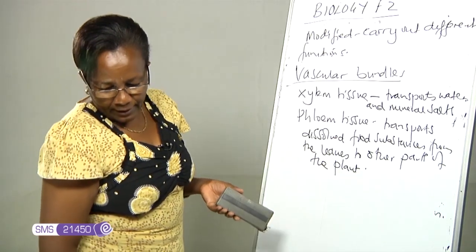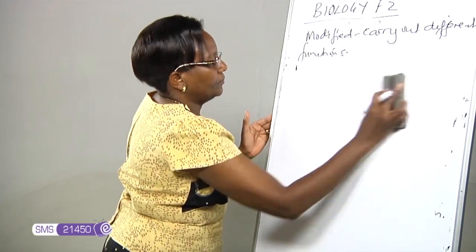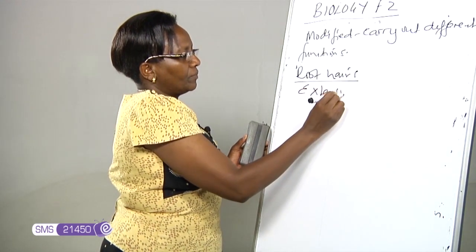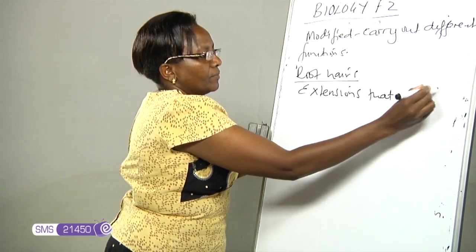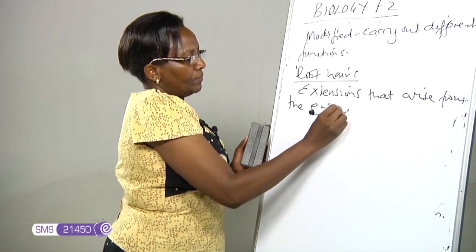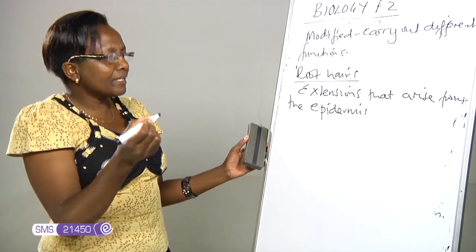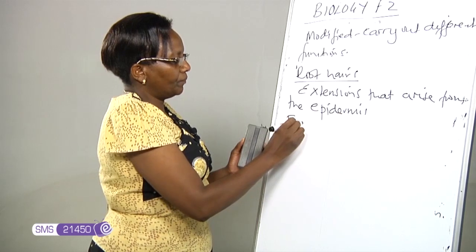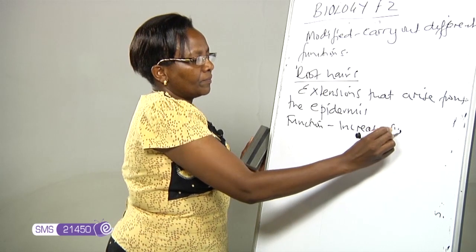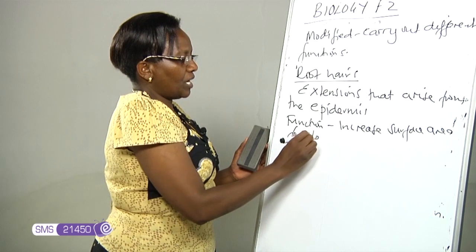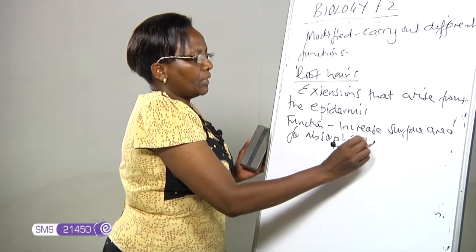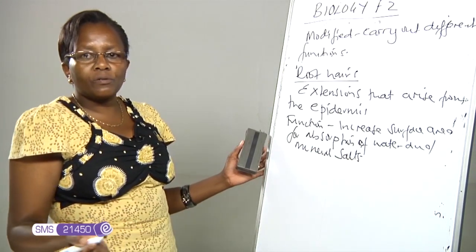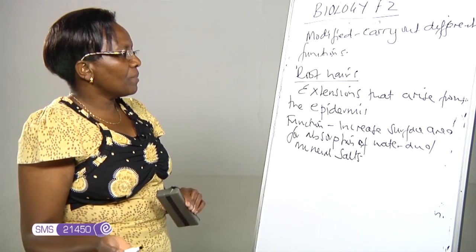The next structure is the root hairs. These are extensions that arise from the epidermis, or the outer layer of the root — in young roots they arise from the periferous layer. The function of the root hair cells is to increase the surface area for absorption of water and mineral salts. In our next lesson we will be able to draw the root hair cell, but for now we need to remember this function.